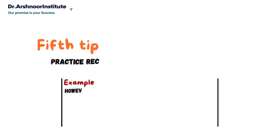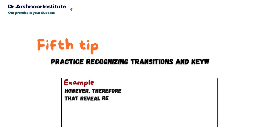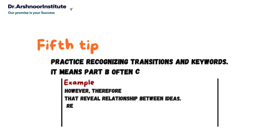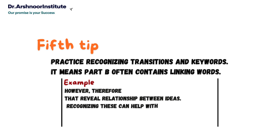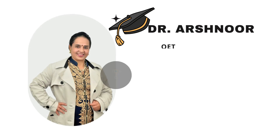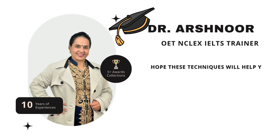Fifth, practice recognizing transitions and keywords. Part B often contains linking words, for example 'however' or 'therefore', that reveal relationships between ideas. Recognizing these can help with comprehension. Hope these techniques will help you to get all the right answers for Part B.